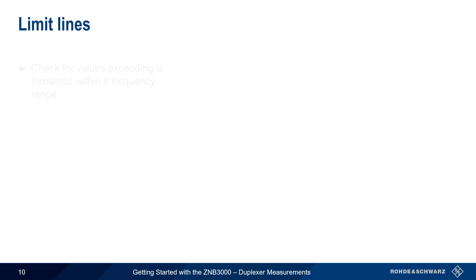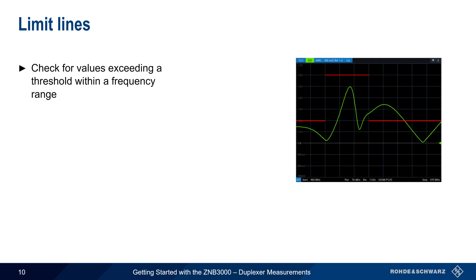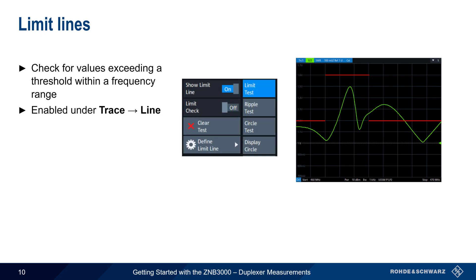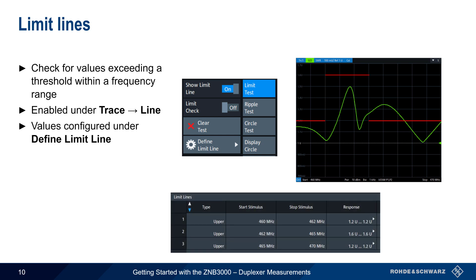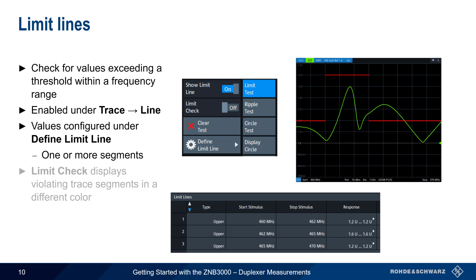Another useful analysis feature is Limit Lines, which check for values that exceed a threshold within a given frequency range. This function is enabled under Trace → Line. The threshold values are entered in the Define Limit Line dialog and can be either a single value or broken up into multiple segments. If the Limit Check switch is enabled, a message will be displayed on limit violation, and the violating segments of the trace will be displayed in a different color.